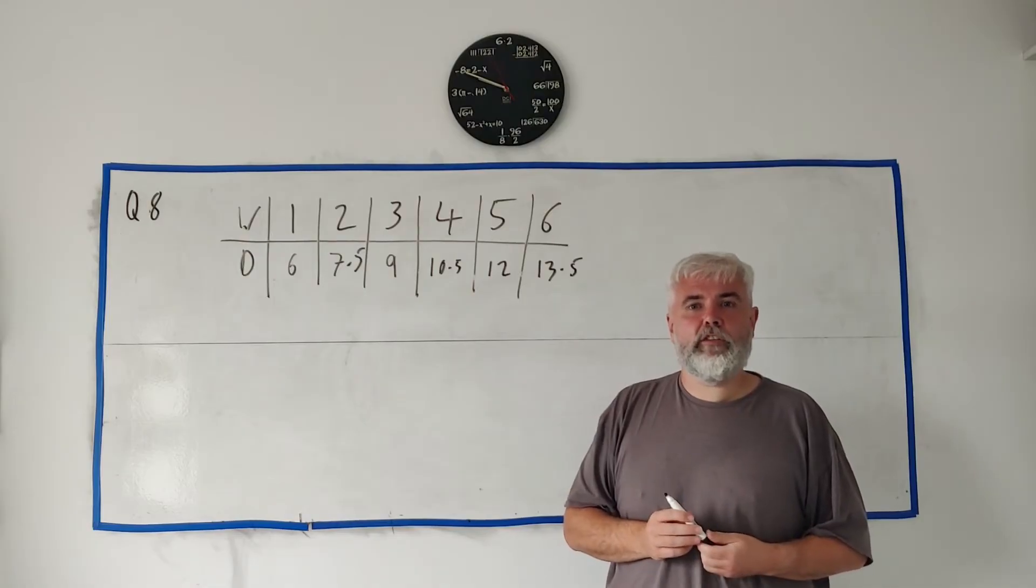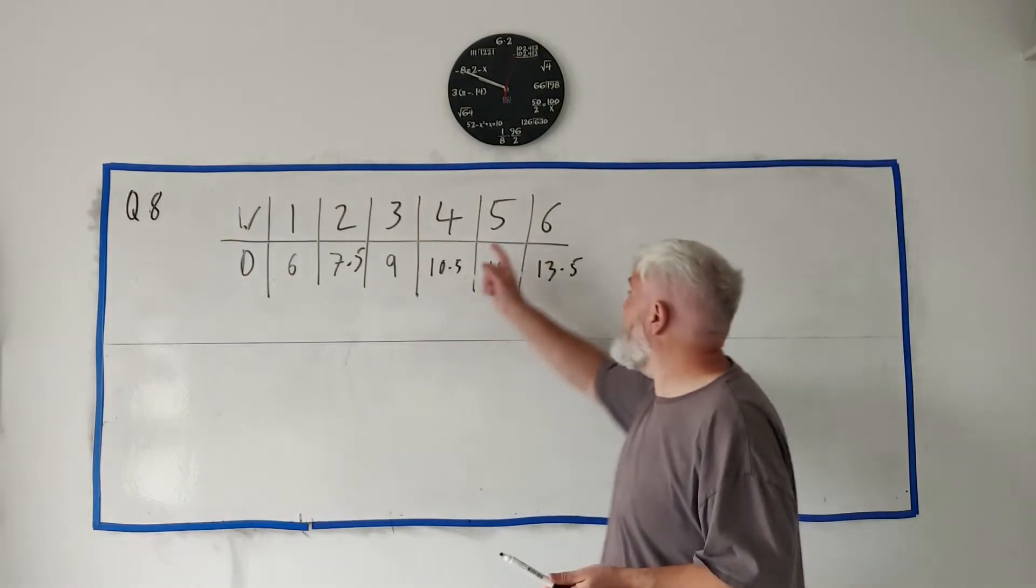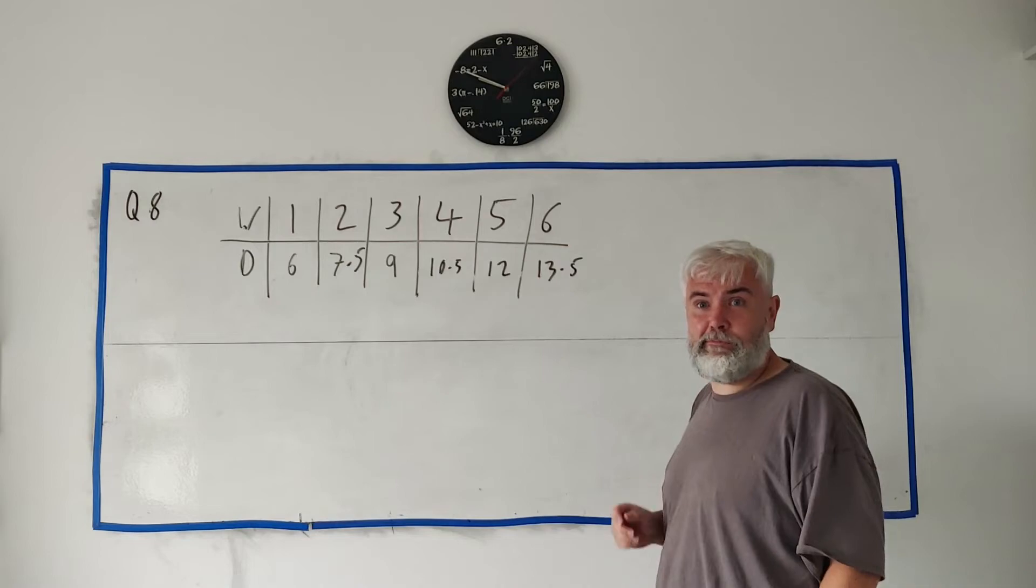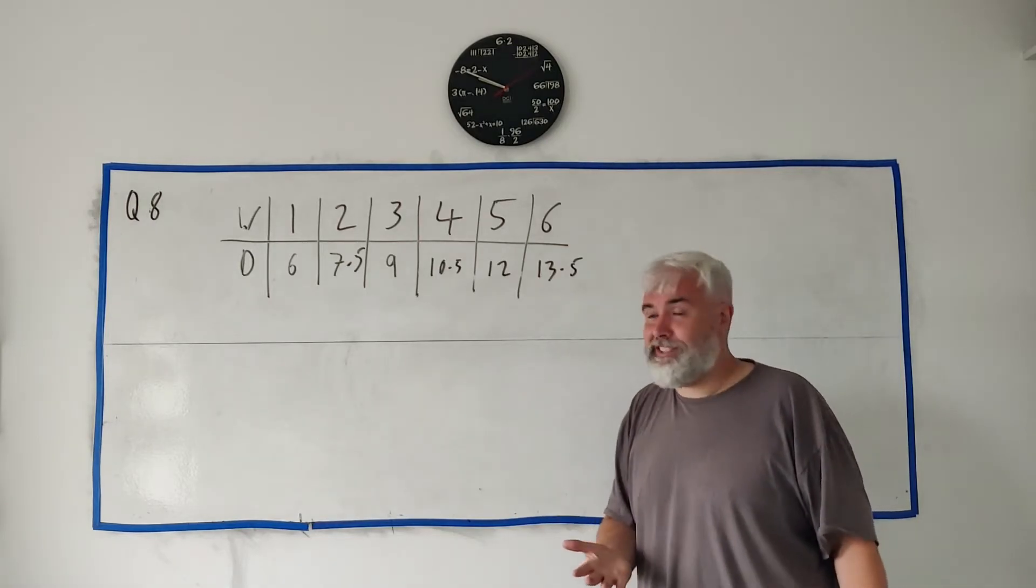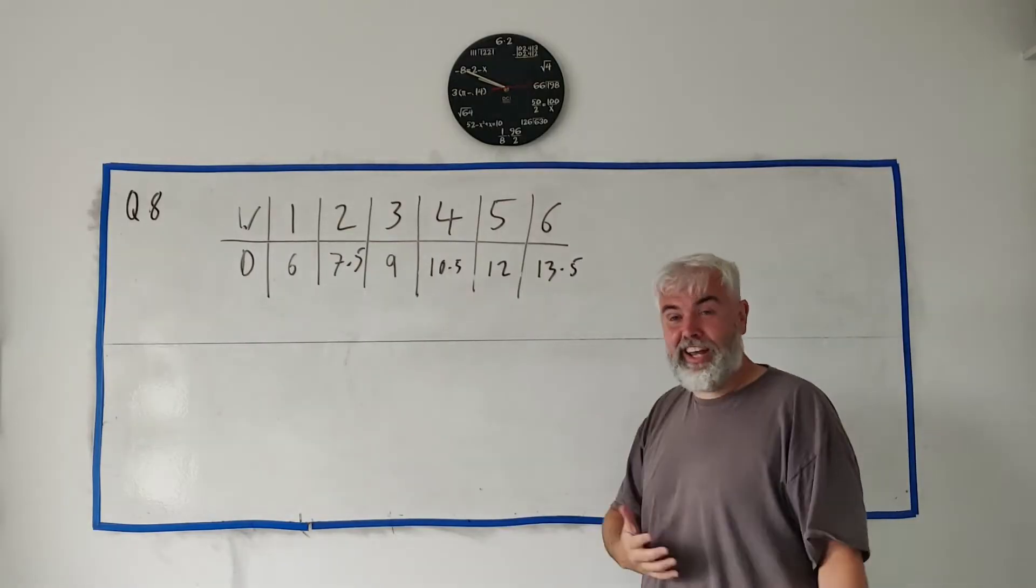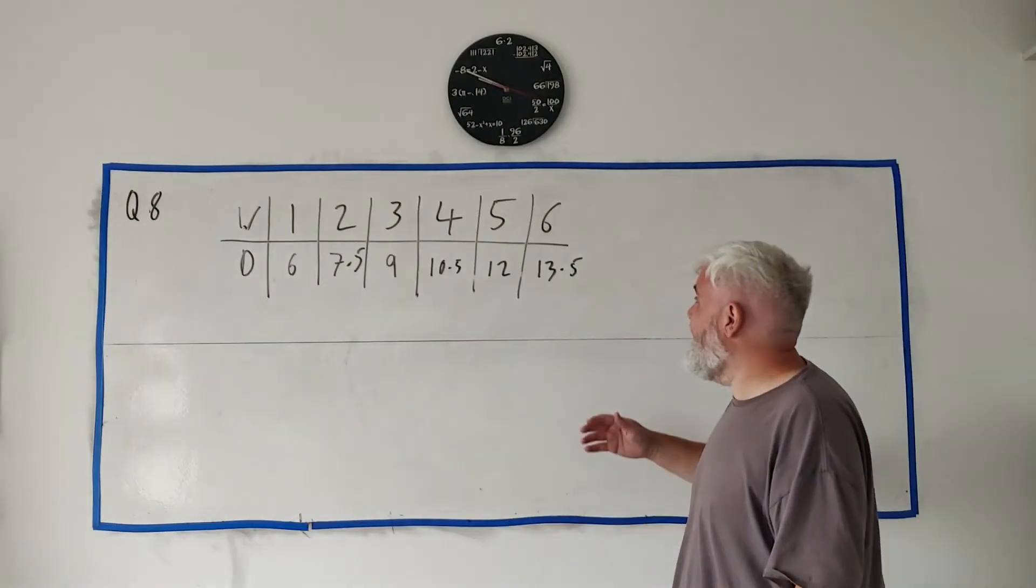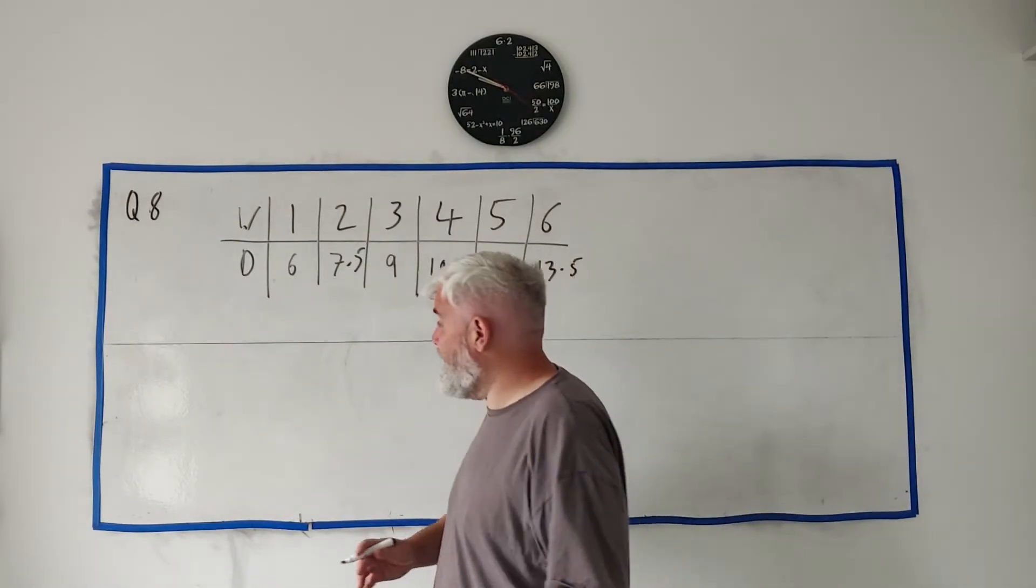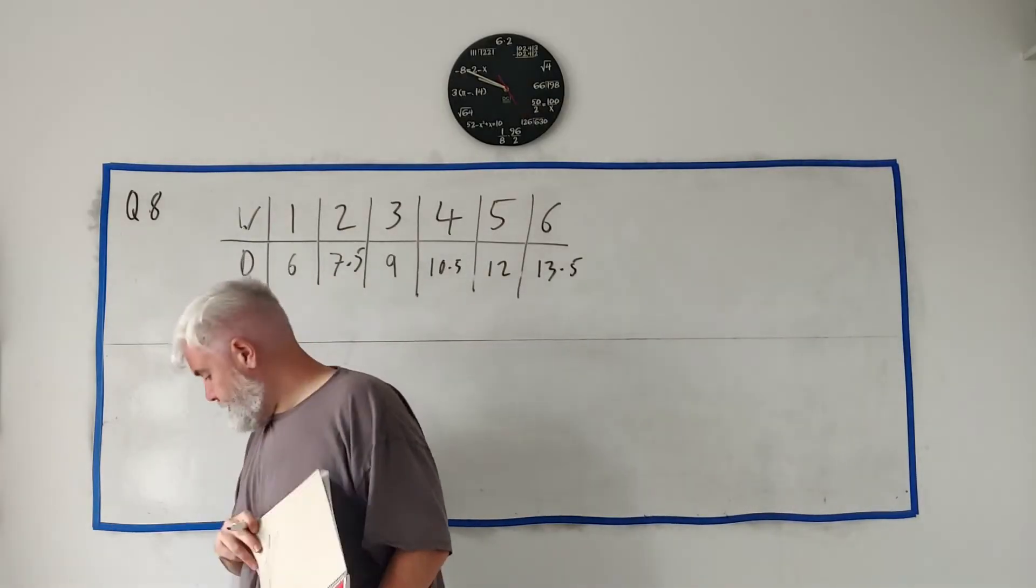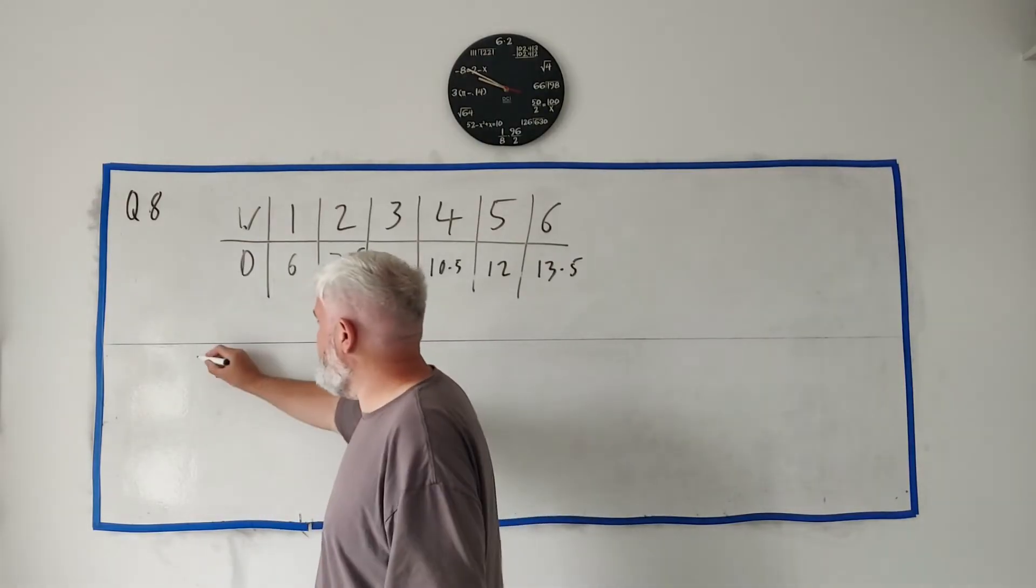Part 2: If Ellie continues with this pattern, find the distance she would run in week 100. Two choices here: you could just stay going and it probably would only take two or three minutes, just keep pressing it. You might lose track and you probably will lose track, you might make a mistake. So you need a better way to do it, and that's where the arithmetic sequence comes in. We know about arithmetic sequences from our tables, our maths tables here, so let's use the formula for that.